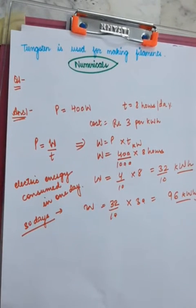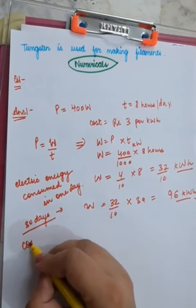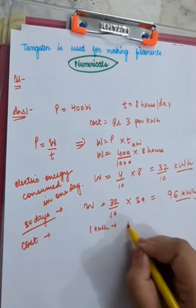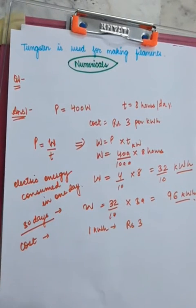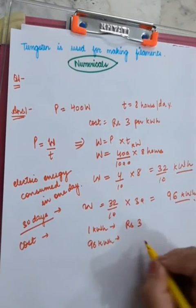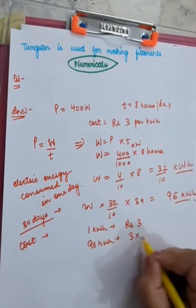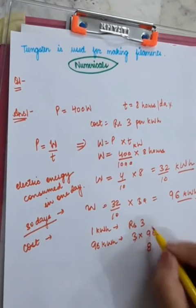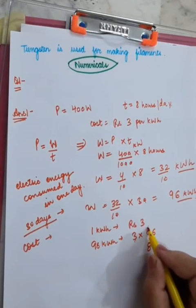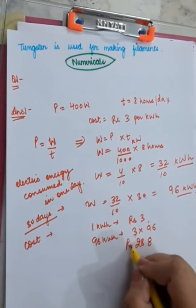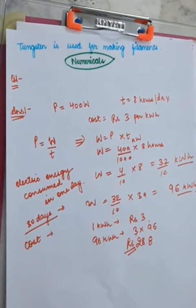Now one part is left, cost. If 1 kilowatt hour costs 3 rupees, so what will be the cost of 96 kilowatt hours? 3 into 96. So 3, 6 is 18, 1 carry 3, 9 is 27, 27 plus 1, 28. So I think the answer should be 288 rupees. So this way you can solve the numericals.